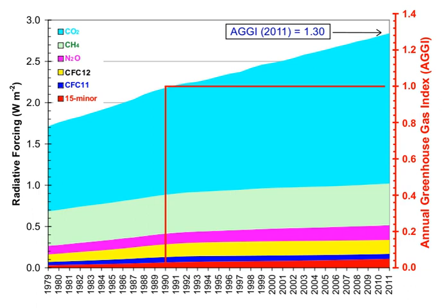Various proxies and modeling suggest larger variations in past epochs; 500 million years ago CO2 levels were likely ten times higher than now. Higher CO2 concentrations are thought to have prevailed throughout most of the Phanerozoic eon, with concentrations four to six times current concentrations during the Mesozoic era, and ten to fifteen times current concentrations during the early Paleozoic era until the middle of the Devonian period, about 400 million years ago. The spread of land plants is thought to have reduced CO2 concentrations during the late Devonian.